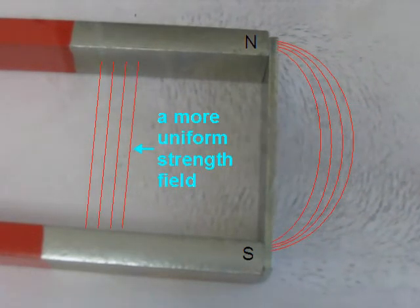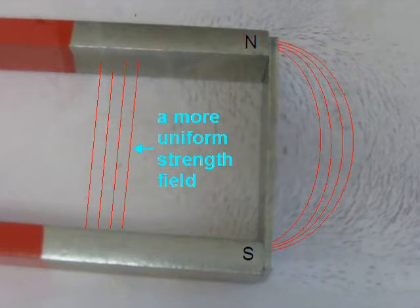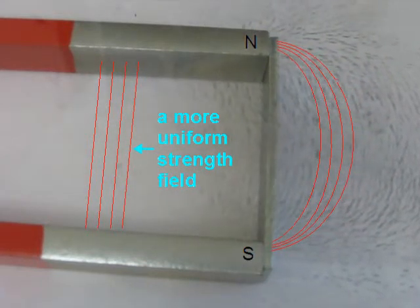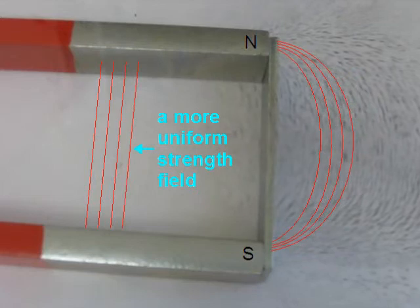Notice that in between the legs of the horseshoe magnet, the filings line up pretty straight across, spaced out evenly. That means the magnetic field there has a fairly even strength along the inside of the legs.